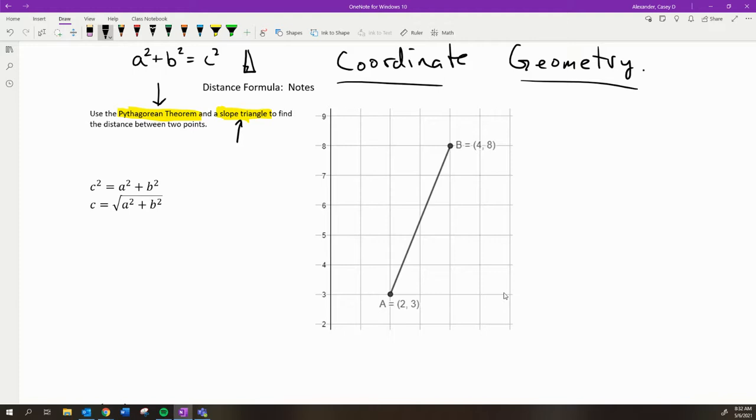And the slope of a line, because this is part of a line here, is equal to the rise divided by the run. Rise over run. And so we have a way to calculate the slope.